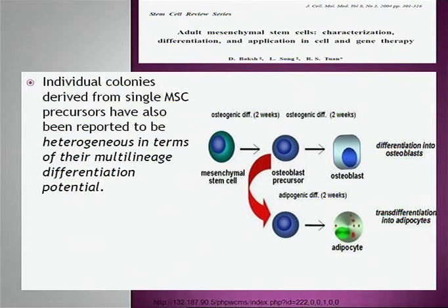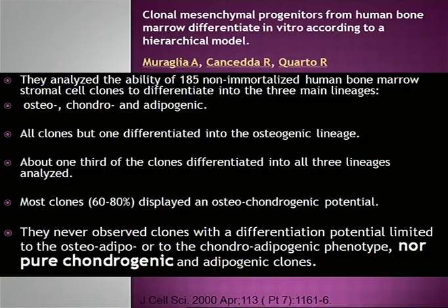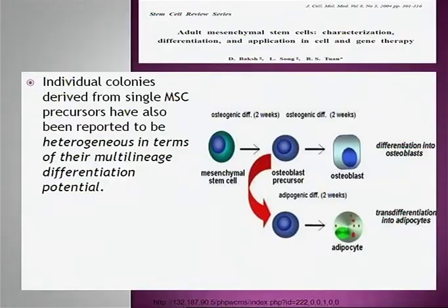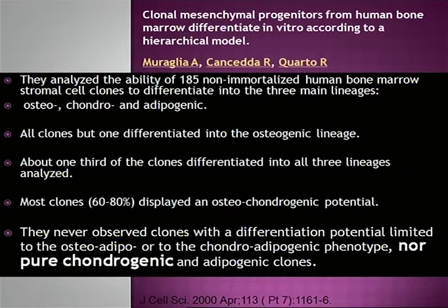Individual colonies derived from single MSC precursors have been reported to be heterogeneous in terms of their multilineage differentiation potential, which is important when using them for cartilage. Muragla and co-workers analyzed human bone marrow stromal clones and found they could differentiate into three main lineages: osteogenic, chondrogenic, and adipogenic. All clones but one differentiated into bone. One third differentiated into all three lineages. Most clones displayed osteochondrogenic potential. However, they never observed clones with differentiation potential limited to pure chondrogenic phenotype — and if you want only cartilage, that is a problem with using stem cells.